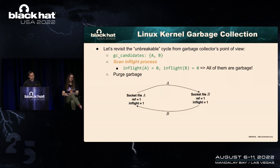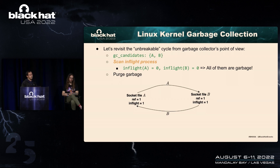If you consider an unbreakable cycle, A and B are considered potential garbage and put into GC candidates. The scan-in-flight process leads to A and B's in-flight counts both being 0, so all are considered garbage. The final step for the kernel is to collect this garbage by removing and freeing the socket buffers and then destroying files A and B.